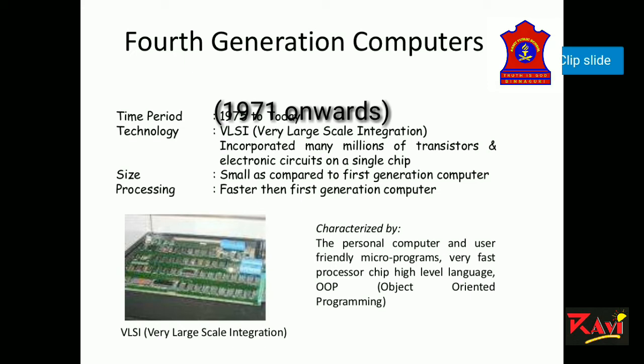In 1981, IBM introduced the first personal computer for home users, also known as the PC. At the same time, Apple introduced the Macintosh. Features of fourth generation computers include: they used microprocessors, they are multi-purpose computers, they are accurate and reliable, and the operating speed was very fast.